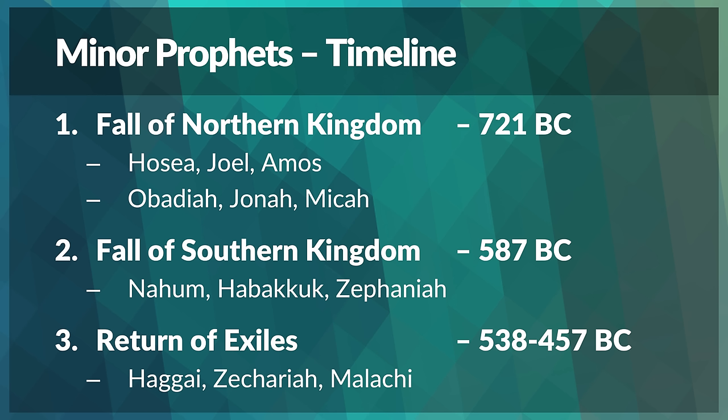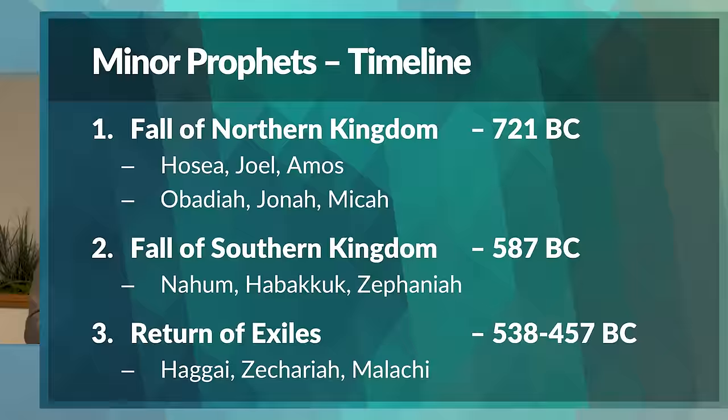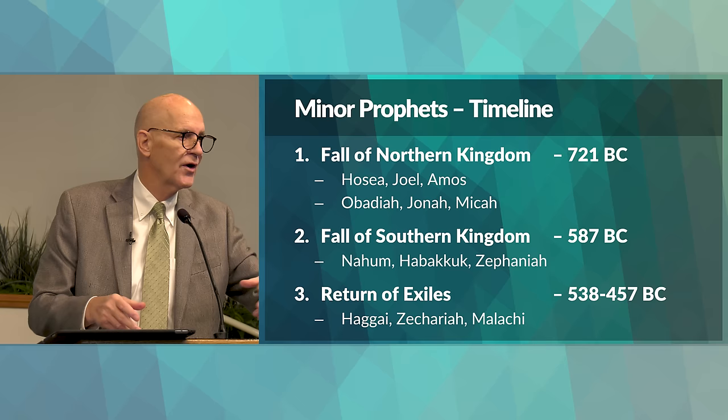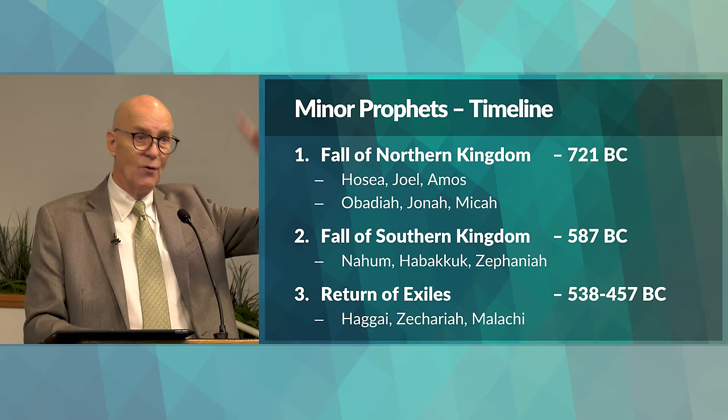The second period is before the fall of the southern kingdom in 587 BC. In the same way, God sent prophets to warn them. Nahum, Habakkuk, and Zephaniah were able to point to the destruction of the northern kingdom because of unfaithfulness and idolatry in their preaching to the southern kingdom. Their message was: 'Don't you remember what happened to the northern kingdom and why they fell? This is going to happen to you.'